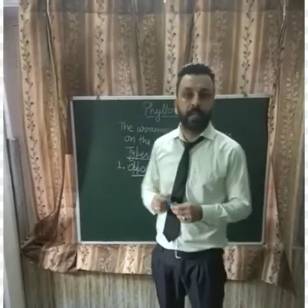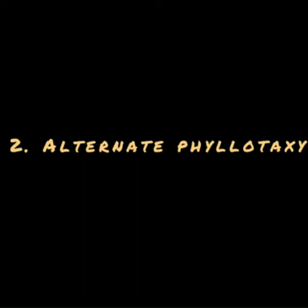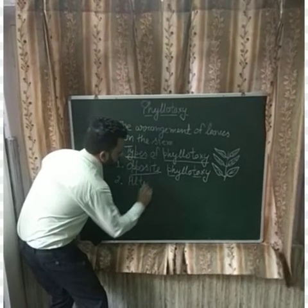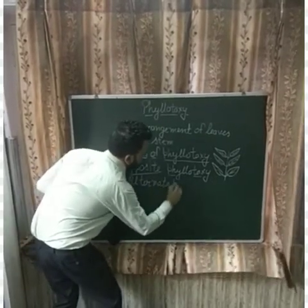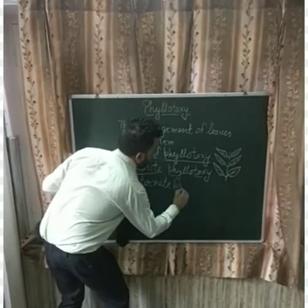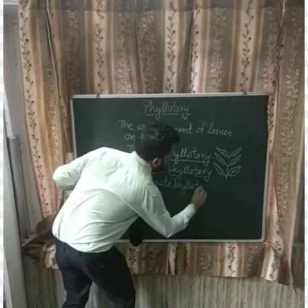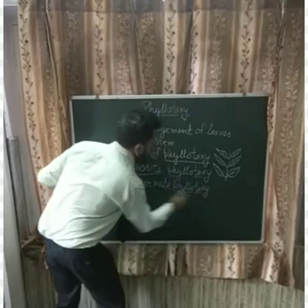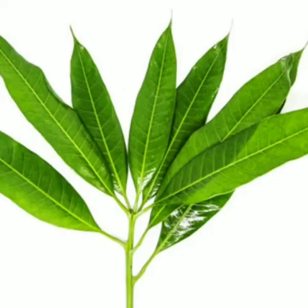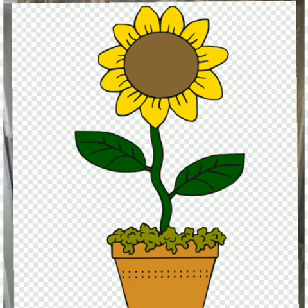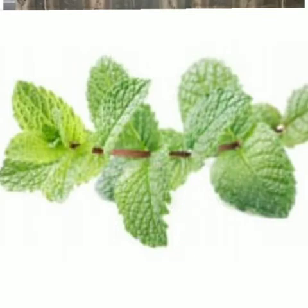The second type of Phyllotaxy is Alternate Phyllotaxy. In Alternate Phyllotaxy, when single leaves arise from each node and the next leaf arises from the successive node on the opposite side of the previous leaf, it is called Alternate Phyllotaxy.